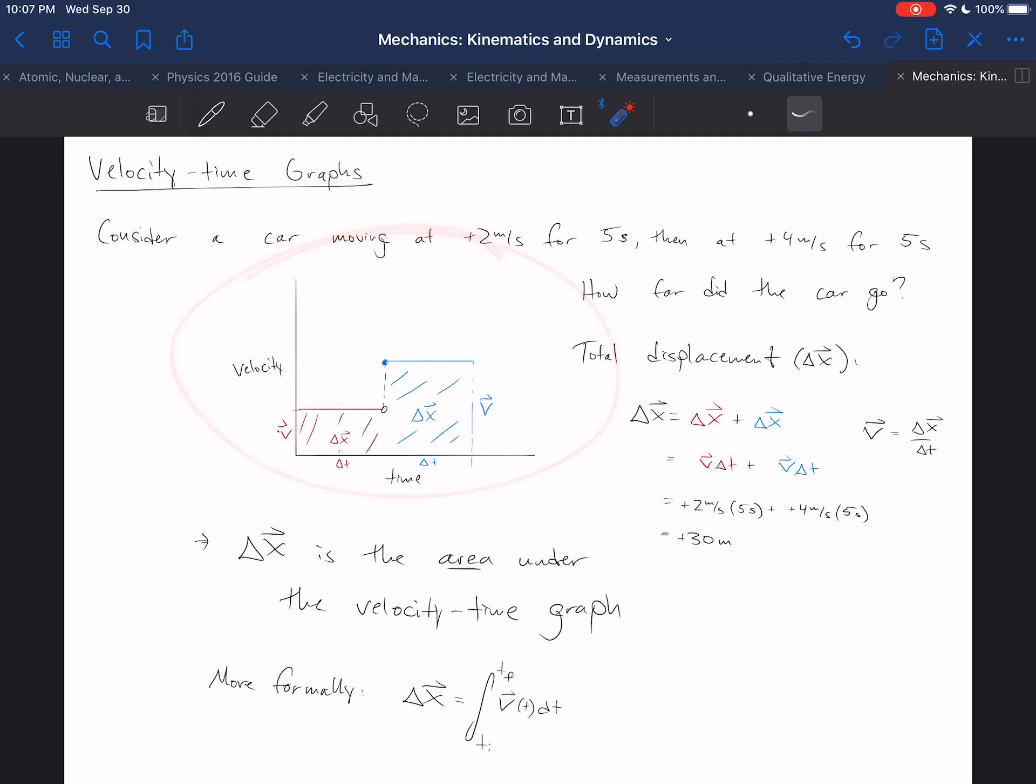So if I plot a velocity-time graph of a car moving at a constant positive 2 meters per second for 5 seconds, so moving at positive 2 meters per second all the way to here, and then at positive 4 meters per second for 5 seconds, then I can find the displacement just by using the graph.